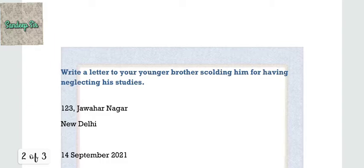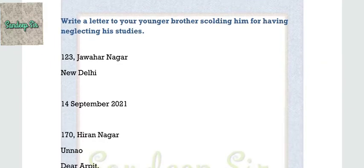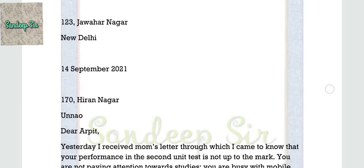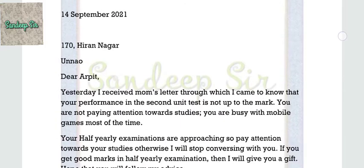Now let's move on to the informal letter, in which you are writing a letter to your younger brother scolding him for having neglected his studies. Start with the brother's address: 123 Jawahar Nagar, New Delhi. Then mention the date, then your own address.